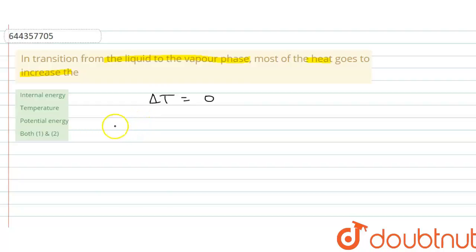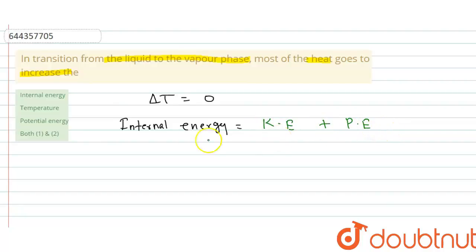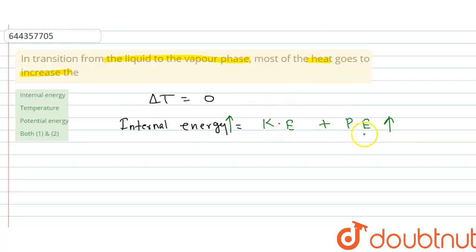Total internal energy equals the sum of kinetic energy plus potential energy. During phase transition there is no change in kinetic energy, but due to increased molecular separation, potential energy increases. Therefore, internal energy also increases, since it is the sum of kinetic energy and potential energy.